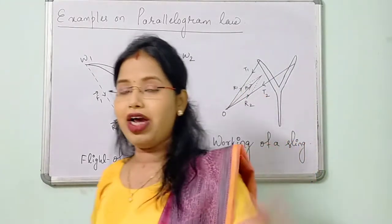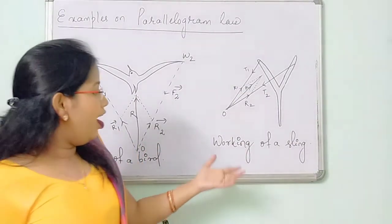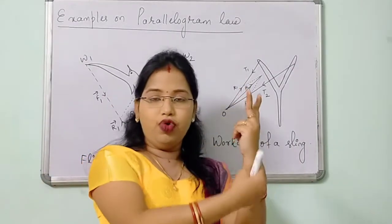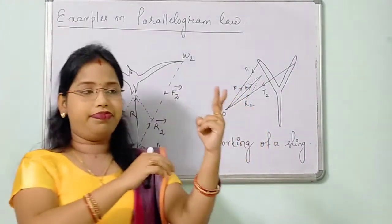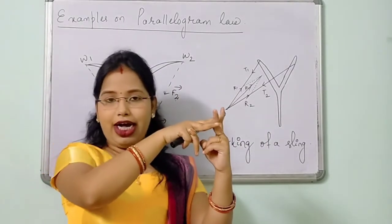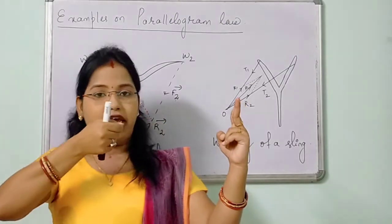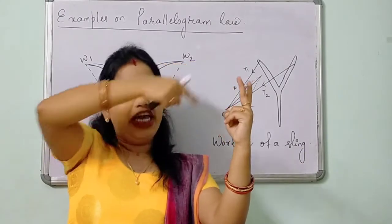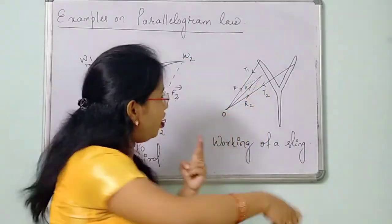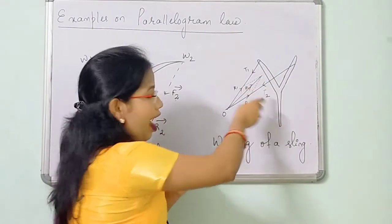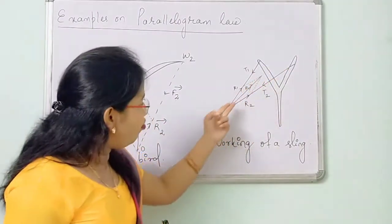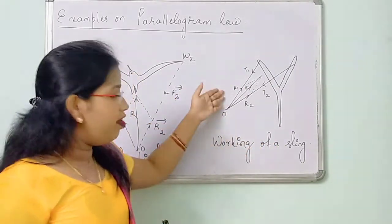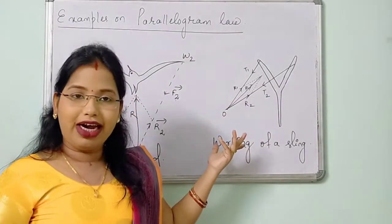Similarly, we can use the parallelogram law during the working of a sling — how it works. Suppose this is a Y-shaped wooden frame to which we attach a rubber band. When we put a stone in the rubber band, the tension in the rubber band is T1 and T2. The line of action of these forces meet at point O, and there must be a reaction force — the reaction for T1 is R1, and for T2 that is R2.